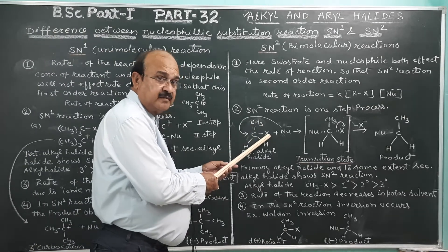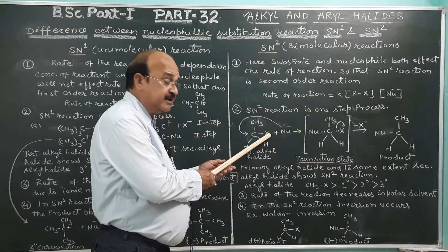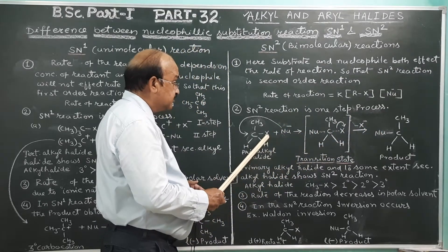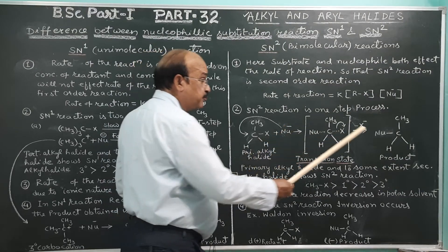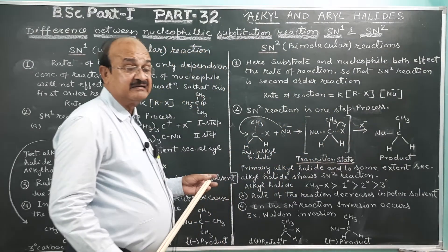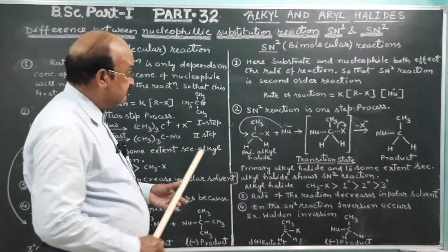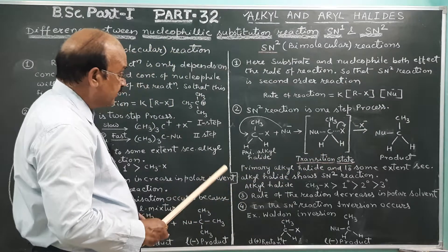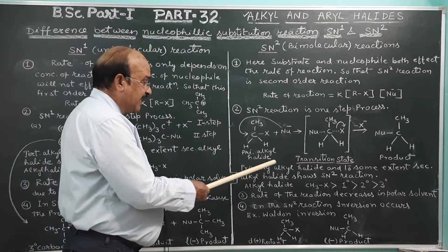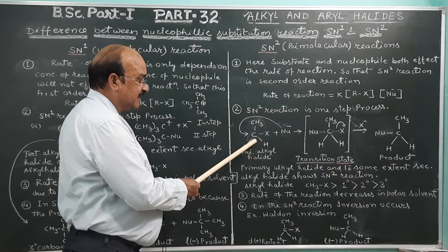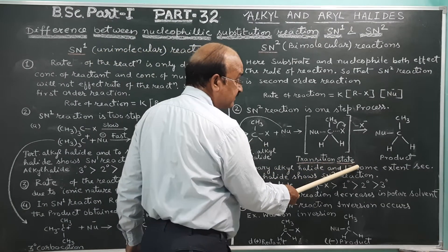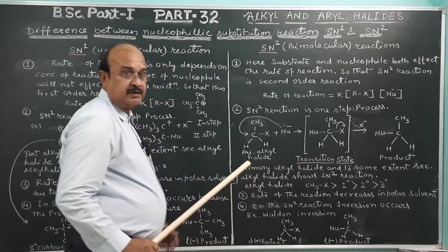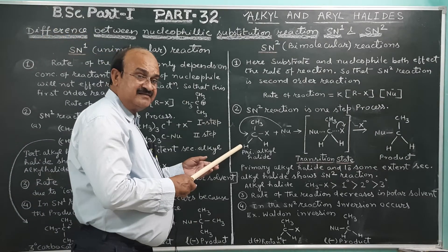In the SN2 product, the reactant and product are mirror images of each other — one is dextro and the other is levo. Primary alkyl halides undergo SN2 reaction, and to some extent secondary alkyl halides also show SN2.